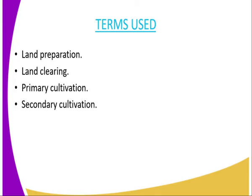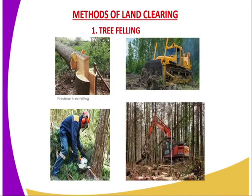Then we have secondary cultivation. It entails the process of harrowing or seed bed refinement, whereby the farmer normally goes back to the field after carrying out primary cultivation and breaks down the large soil clods into small pieces, so that you can establish a fine tilth which will promote uniform germination and also uniform depth of planting.